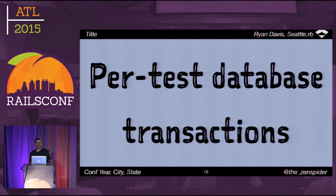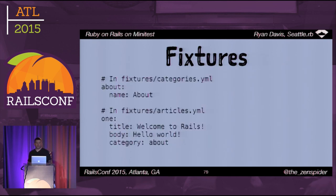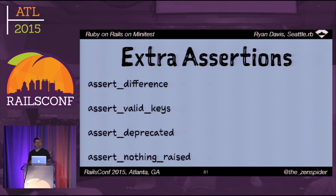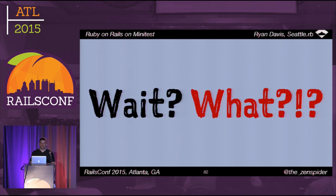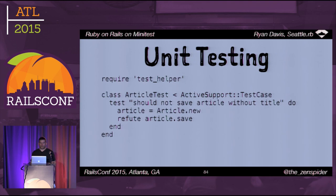The basic architecture is: you write your own test class that subclasses ActiveSupport::TestCase, which subclasses Minitest::Test. It provides things like per-test database transactions so you don't have to clean up, before and after setup and teardown hooks, fixtures to load test data, declarative forms if you like them, and extra assertions like assert_difference, assert_valid_keys, assert_deprecated, and assert_nothing_raised — which is only there for compatibility's sake and personally I think it should be deprecated and removed, maybe in Rails 5.